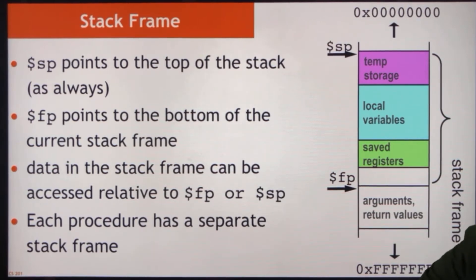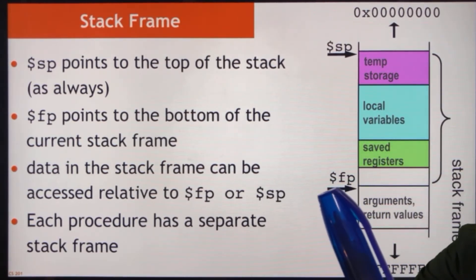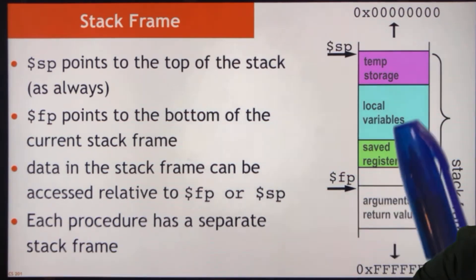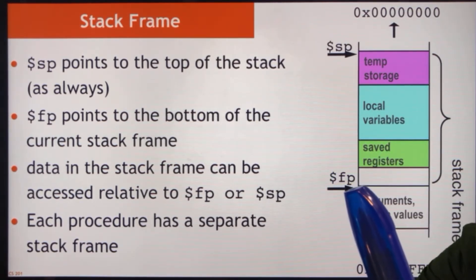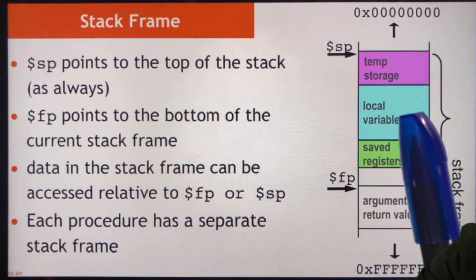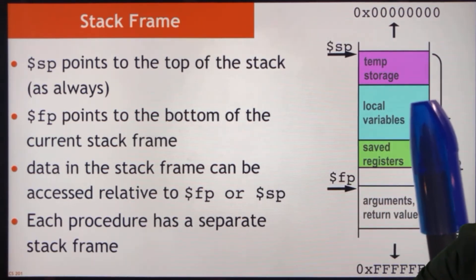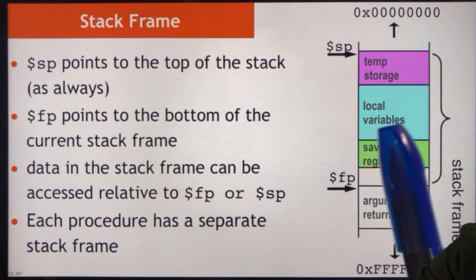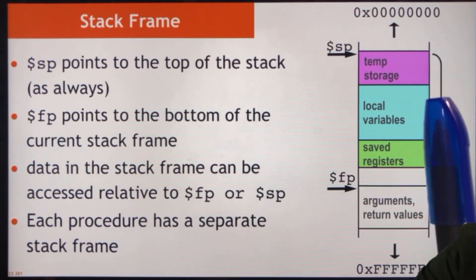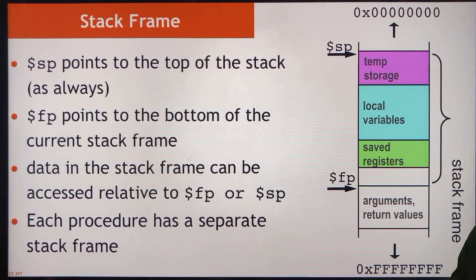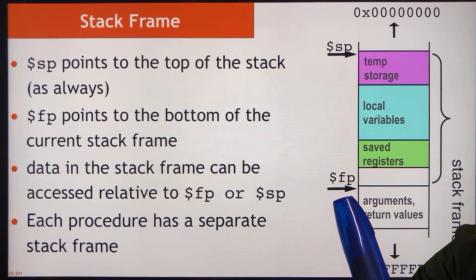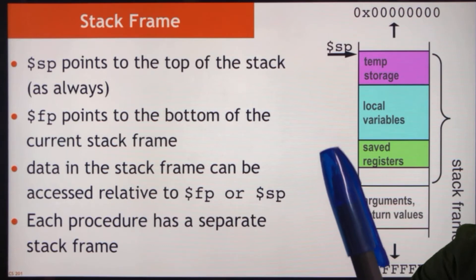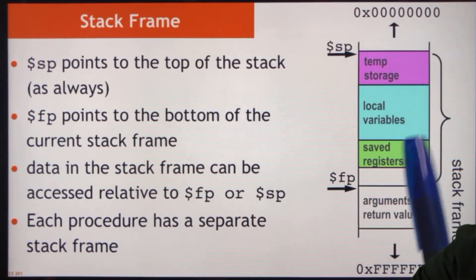The frame pointer is static — it stays in place as the stack pointer moves up and down. You can always say that a local variable, for example a loop index i, is always at frame pointer minus 16 or some consistent offset. As long as you're consistent about where you put it, you can always access it relative to the frame pointer with a consistent offset. This is why the load and store format in MIPS is so useful: you can have a pointer variable as the address, and then an offset from that address, giving you access to whatever is on the stack.